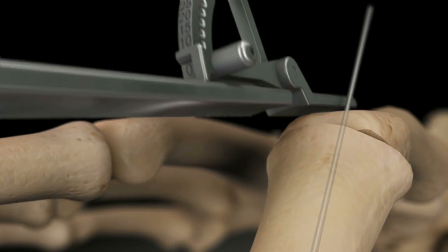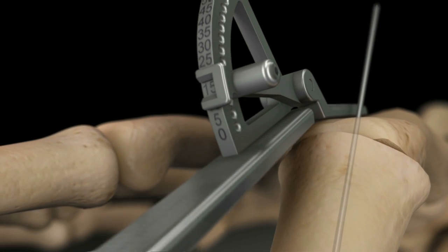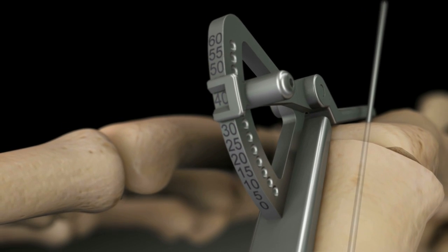Retrograde the K-wire into the channel of the distal bone and reduce the joint. Use the goniometer to confirm the angle of the fusion.